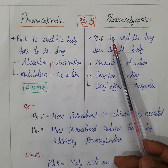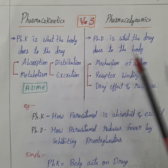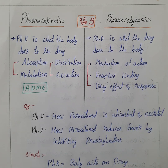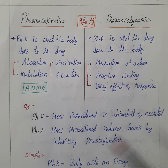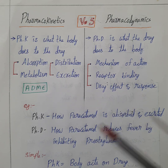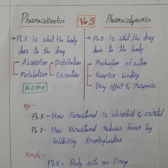Now let's talk about pharmacodynamics. This is all about what the drug does to the body. It includes mechanism of action — how the drug works — receptor binding, how the drug interacts with body receptors, and drug effects and response, where the outcome of the drug's action is measured.